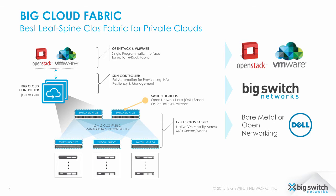The control plane for the fabric — the single externalized point of control for the entire fabric — is a highly available hierarchical controller cluster. If one controller is lost, the cluster fails over to a standby controller with no impact on packet forwarding. There's no single point of failure in this network. In an extreme scenario, the controller cluster can completely fail and packet forwarding will continue headlessly.